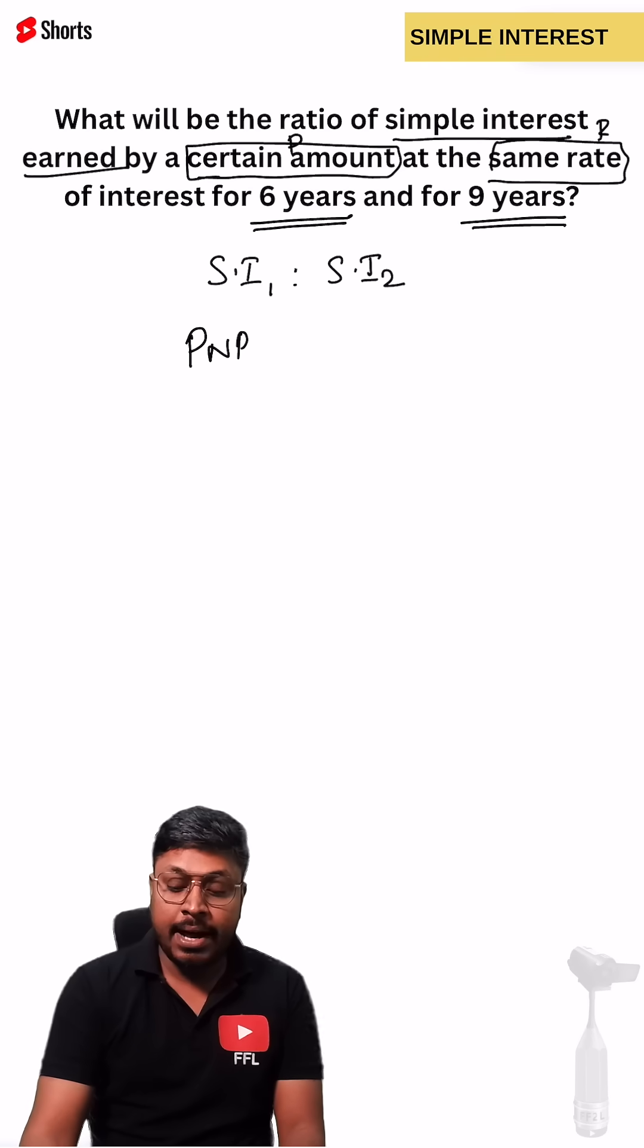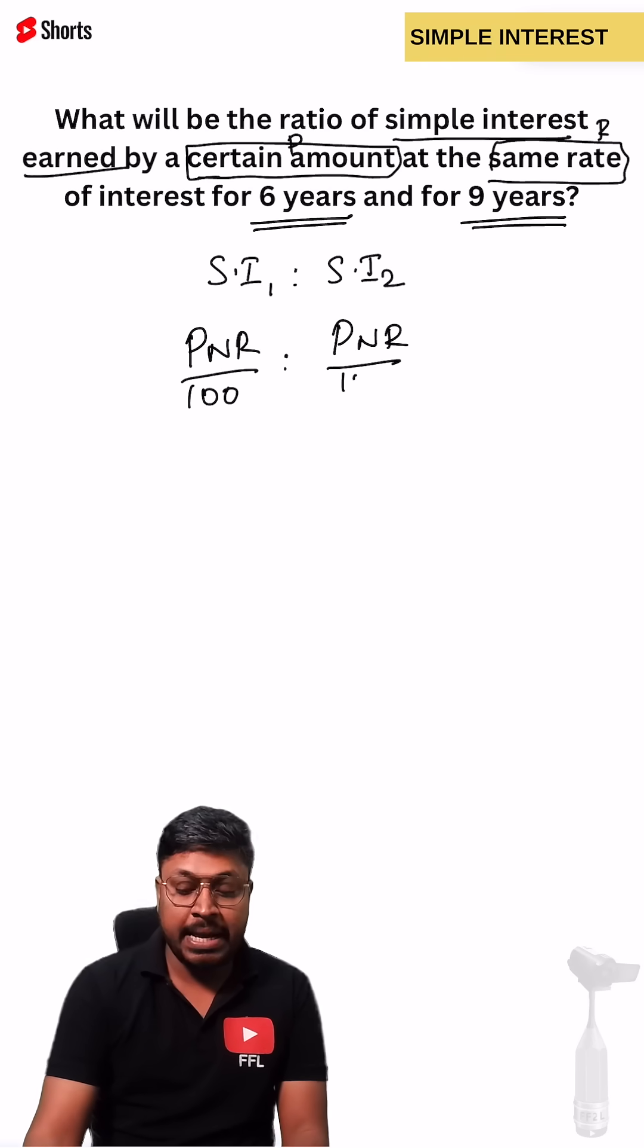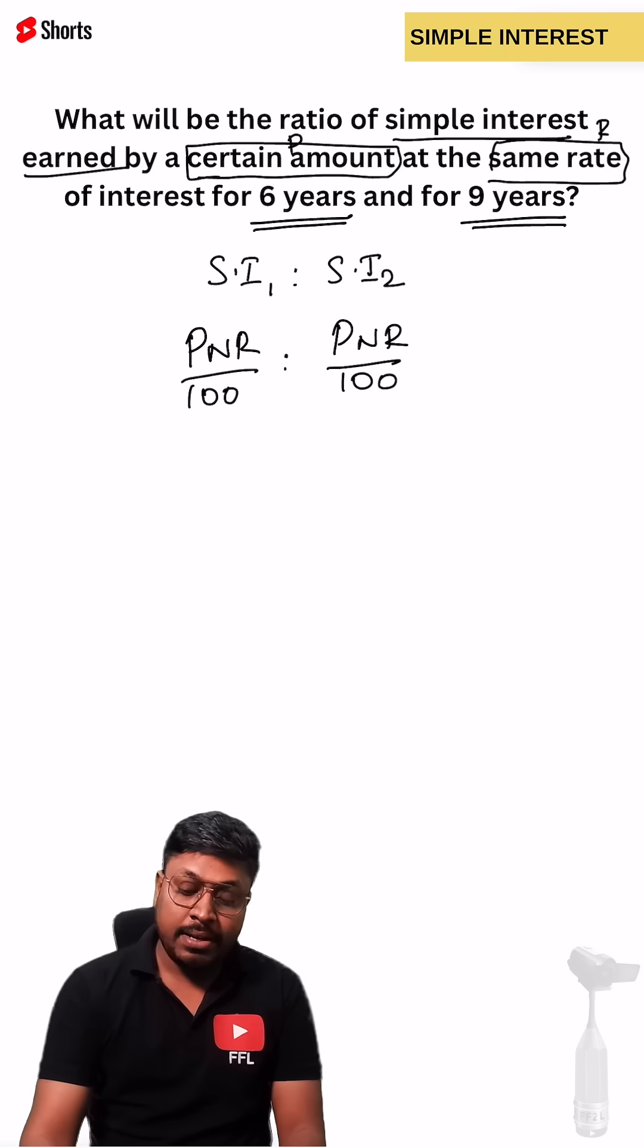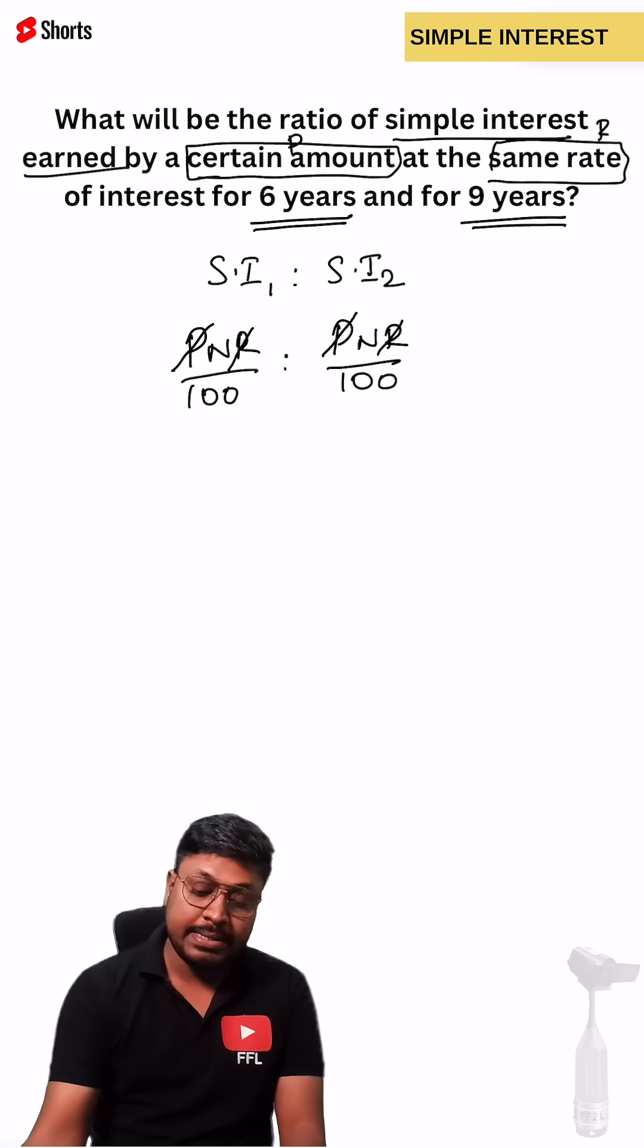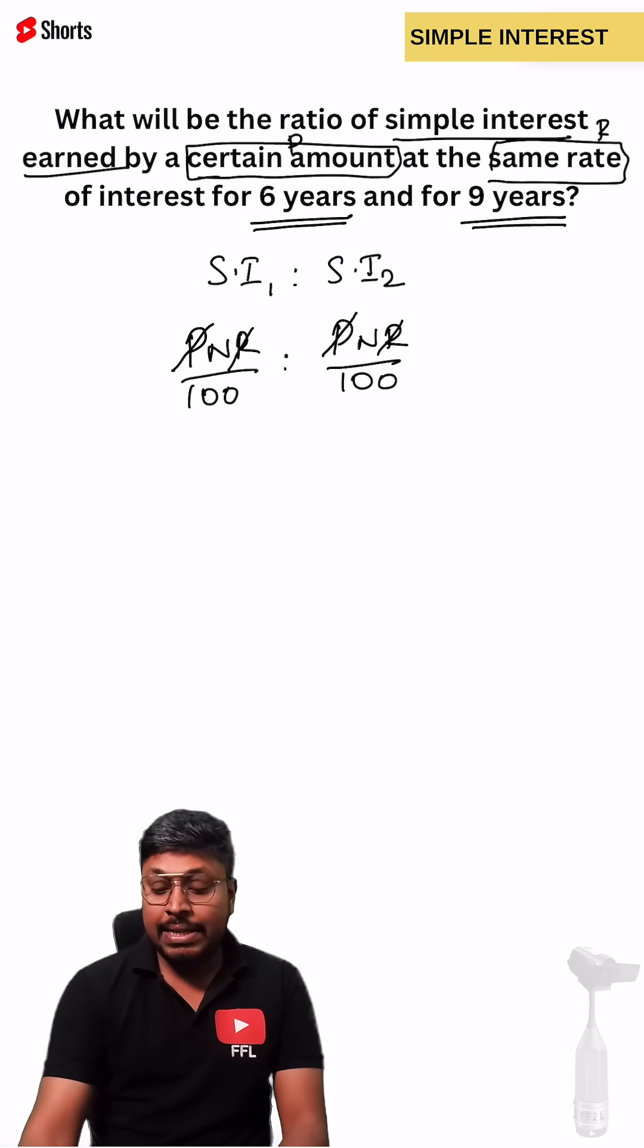Simple interest formula is P*R*T divided by 100. So the ratio is P*R*6/100 to P*R*9/100. We can cancel principal and principal. Rate of interest, both are same, we can cancel it. Only the years are different.